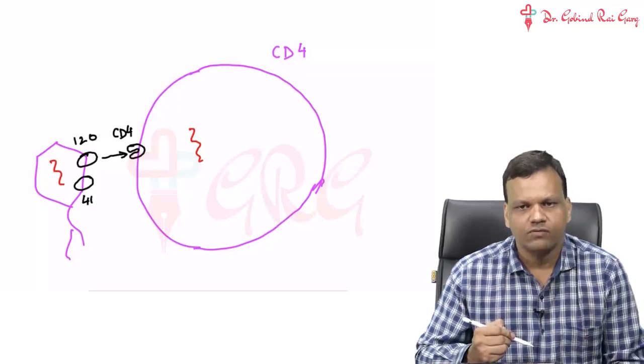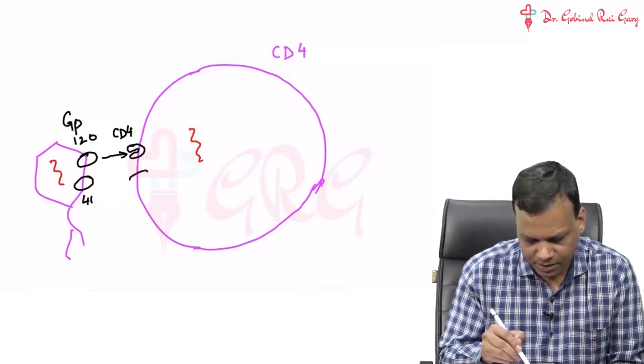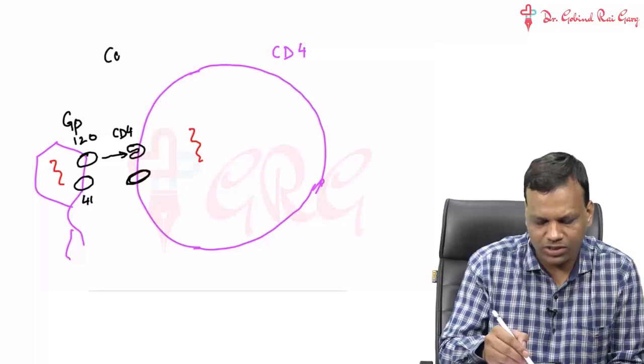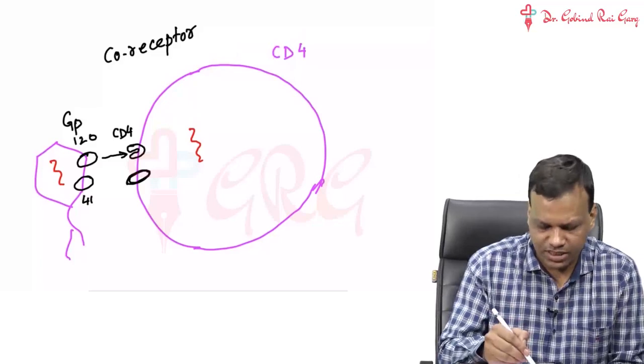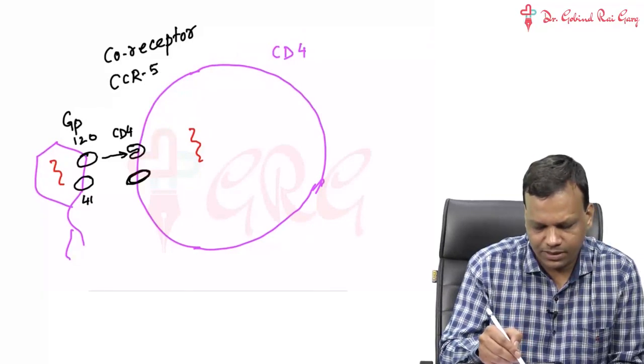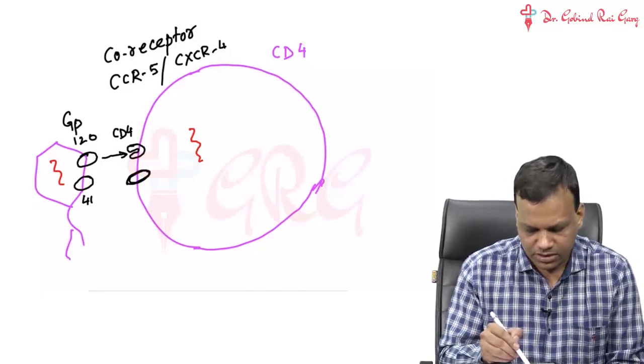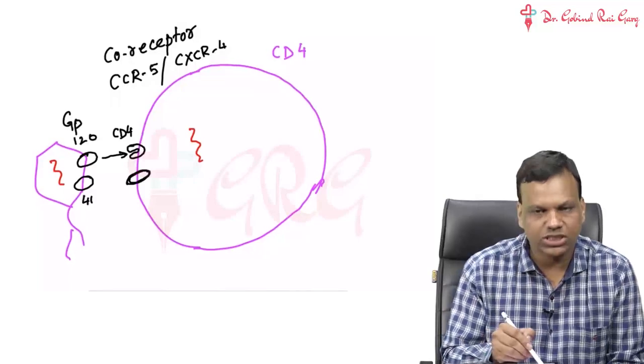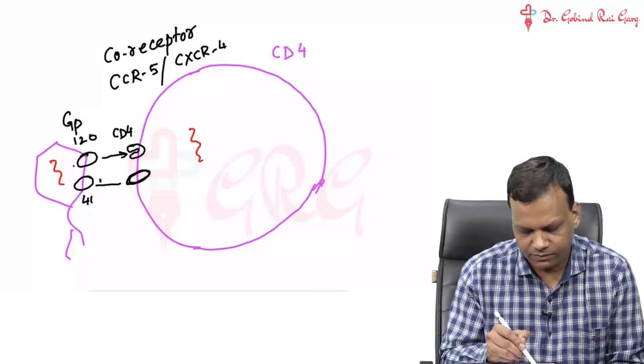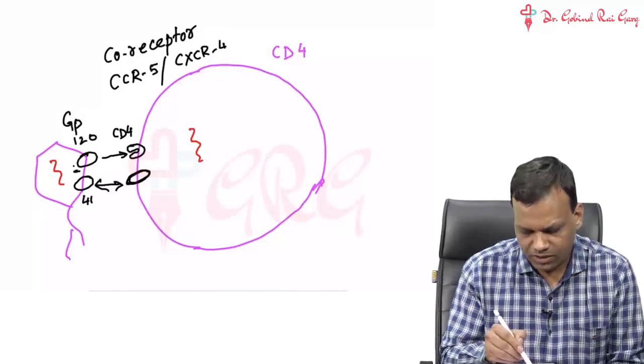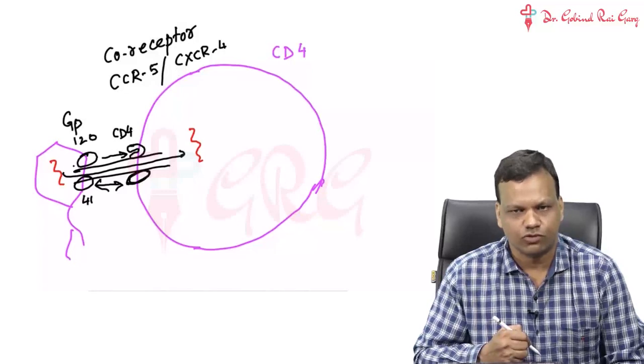When glycoprotein 120 binds to CD4 receptors, this leads to binding of another receptor called co-receptor. This co-receptor is different in different CD4 cells. Some CD4 cells contain CCR5 as a co-receptor and some contain CXCR4 as a co-receptor. When CD4 receptor binds to GP120, now this co-receptor CCR5 or CXCR4 can bind to GP41, and when this binds, there will be formation of a pathway through which DNA can come in the CD4 cells.